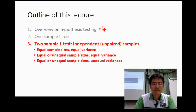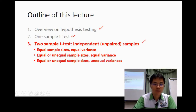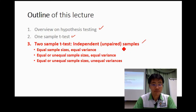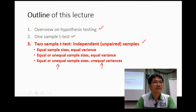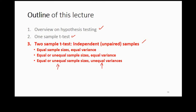We have done hypothesis testing for the one-sample test. Now we move to the two-sample t-test for independent samples. First I will give some basic introduction about the two-sample t-test, then discuss how to calculate it, and then discuss the importance of a few parameters used in the statistical test — first is the sample size, and the second is variance: equal variance or unequal variance between two samples.